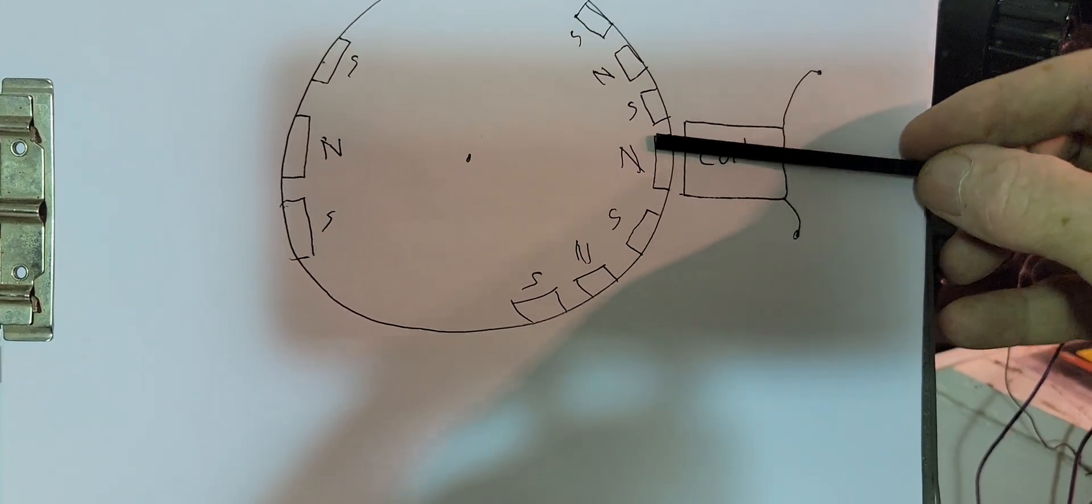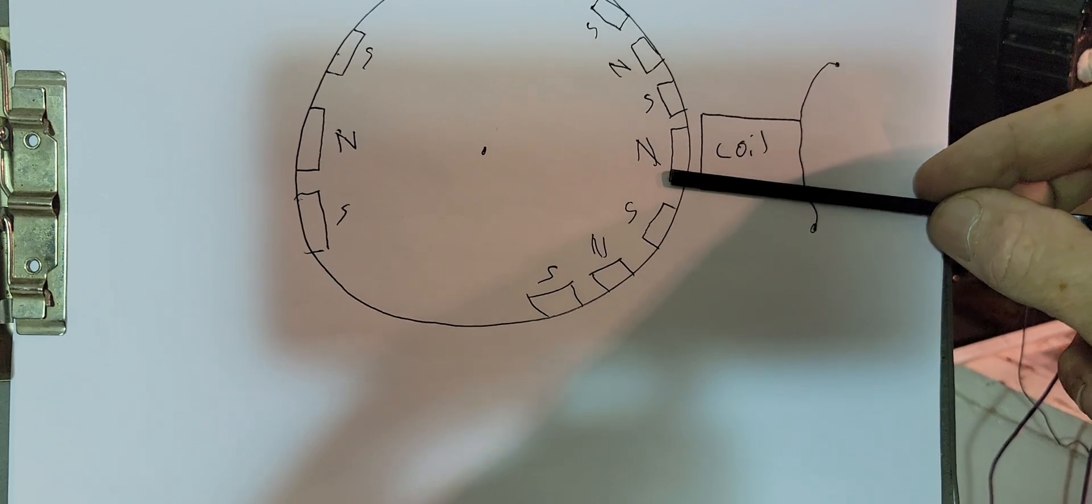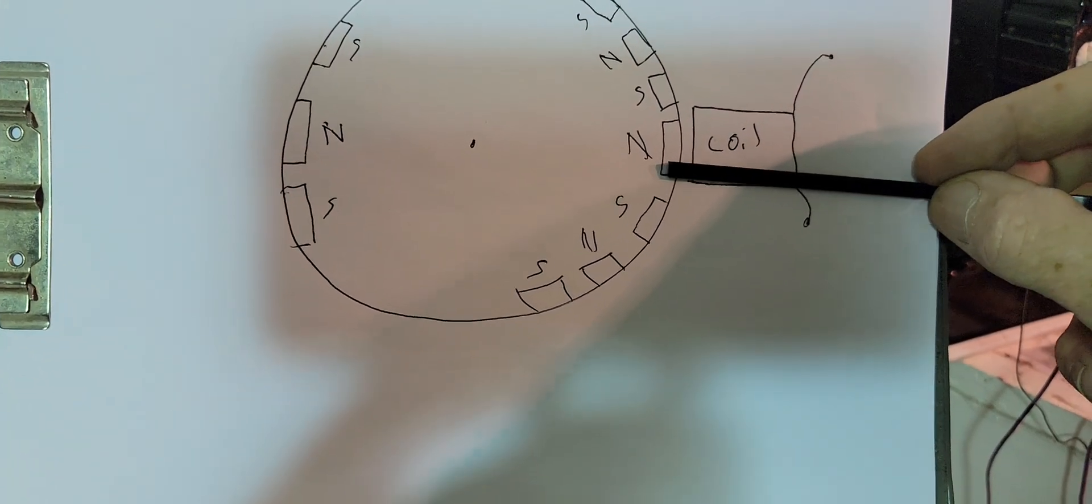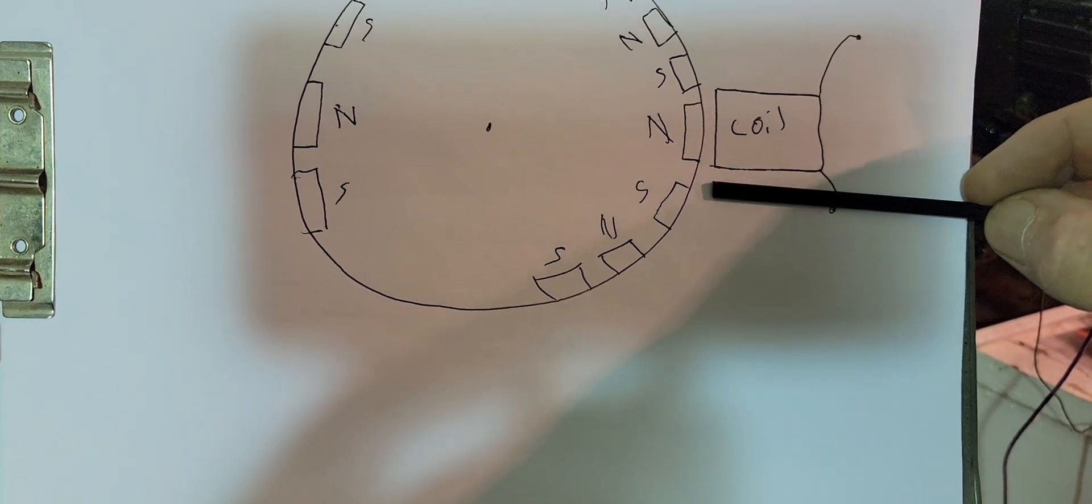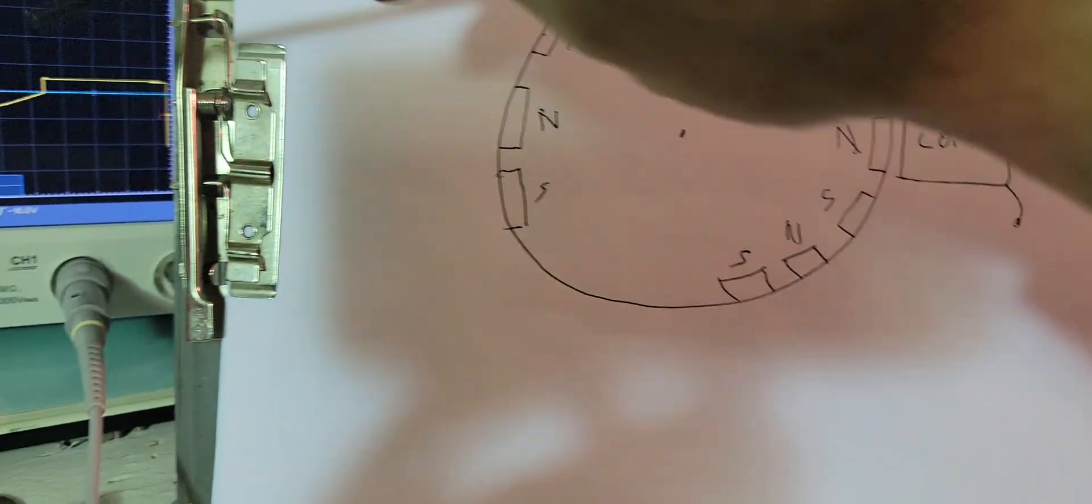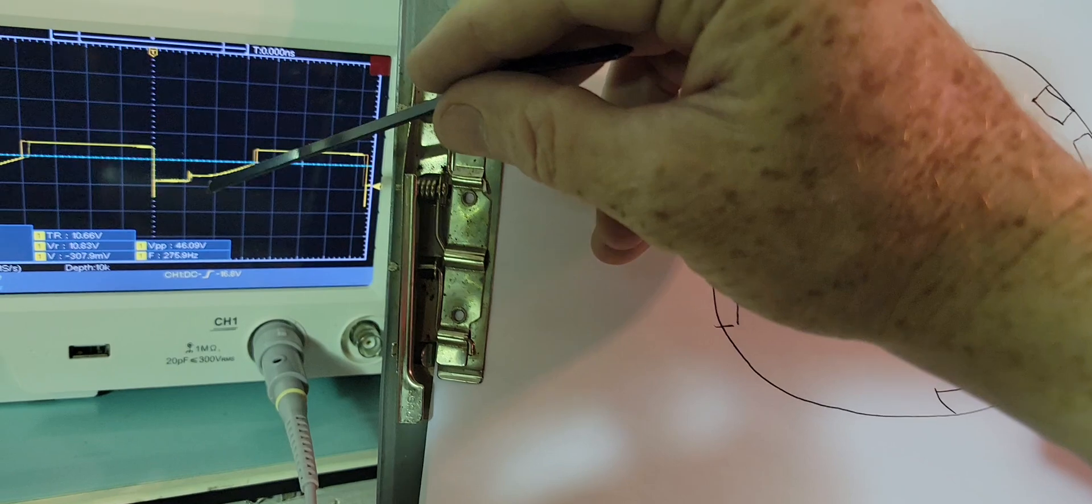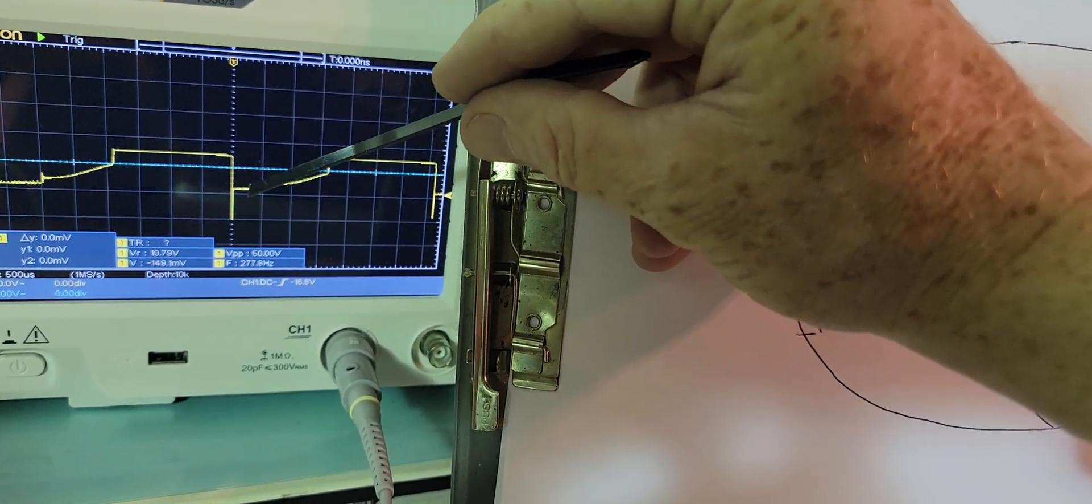And then it'll shut off when that magnet is probably about here. It'll shut off, this magnet flies by the coil while that motor is off. But that's where it gets it, where it turns into an alternator.